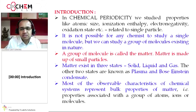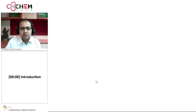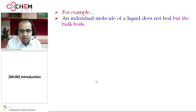Most of the observable characteristics of chemical systems represent bulk properties of matter. These properties are associated with a group of atoms or molecules and cannot be shown by individual molecules, ions, or atoms. For example, an individual molecule of liquid cannot boil, but the bulk can boil. Individual atoms or molecules cannot have a melting point, but bulk can have a melting point.